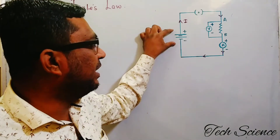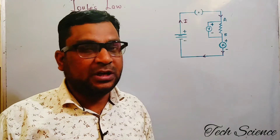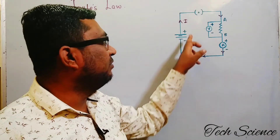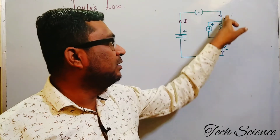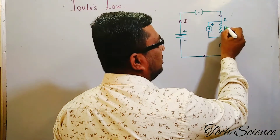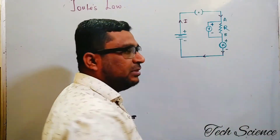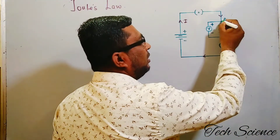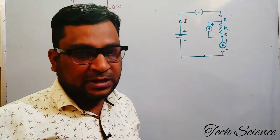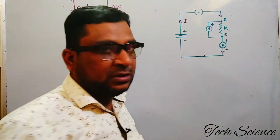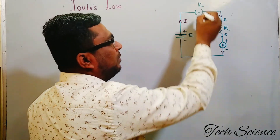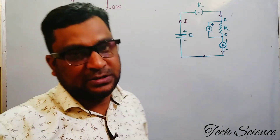Here we have a cell — a battery — which is used to supply energy for the charge to flow from one point to another. Conventional current flows from the positive terminal of the battery, completes the circuit, and moves toward the negative terminal. We have resistance R, and the charge flows from point A to point B via this resistance R. An ammeter is there to measure current, a voltmeter measures the potential difference, and a key is used for on/off purposes. Right now the key is on, so there is a flow of current in the circuit.